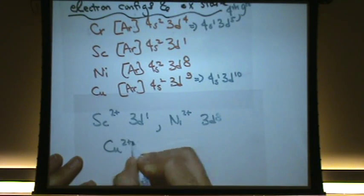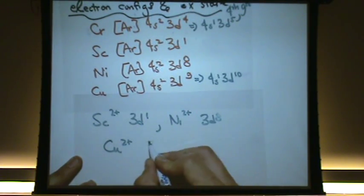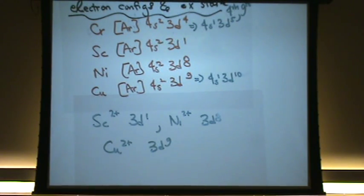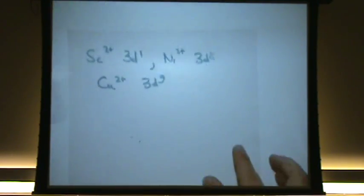And so on. Copper 2 plus would be 3d9. Okay, so be familiar writing these electron configurations. Be familiar coming up with the oxidation state of any given metal. And we've done practices of those before, so I won't do them again.